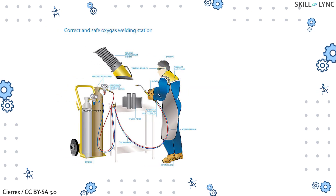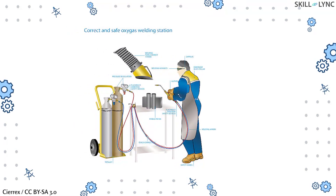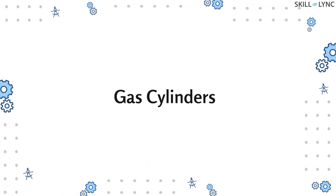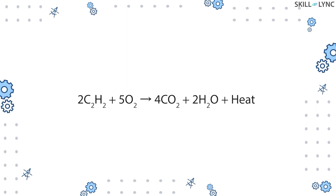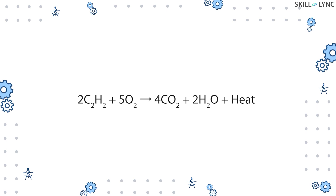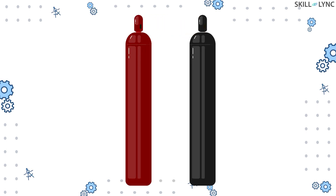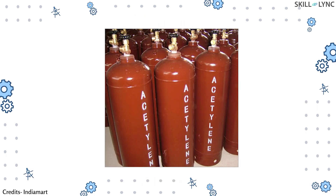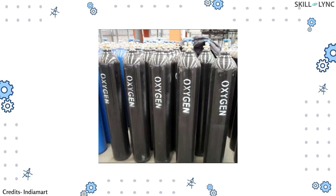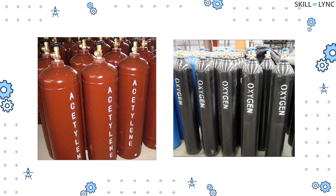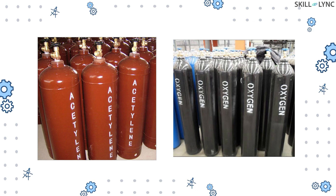The components used in oxygen-acetylene welding are similar for all types of gas welding. The first component is the gas cylinder. Five parts of oxygen is required to fully combust two parts of acetylene. Oxygen and acetylene are stored in separate cylinders. The color of the tank holding acetylene is maroon, and the oxygen cylinder is colored black. This is the color convention followed in India and is not constant across all countries.